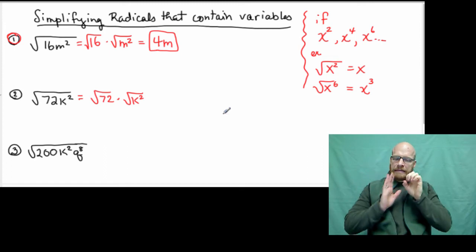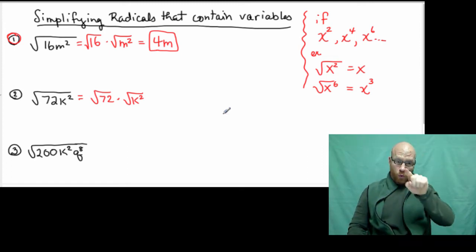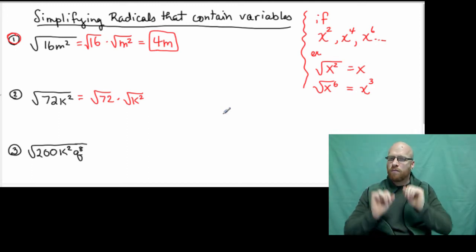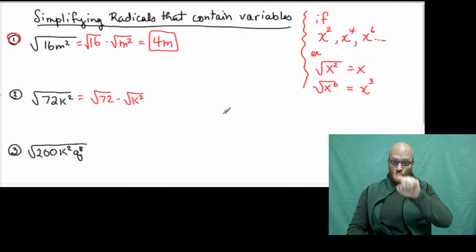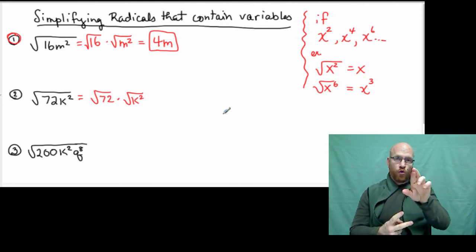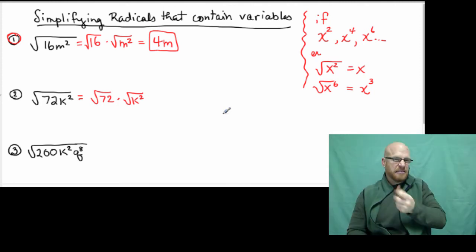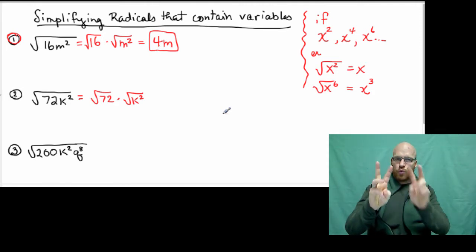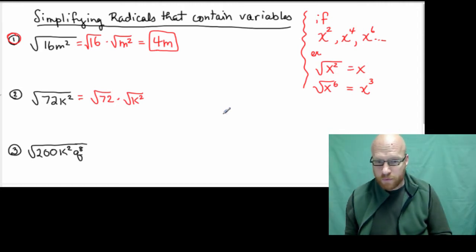Now from previous vlogs, well for this vlog actually, k squared, the square root is k. Now 72, in previous vlogs with that one, we had the square root of 72 and we broke it down. We simplified it into two factors. There are several perfect squares within 72, but the best one would be 36 times 2. Now watch what happens.